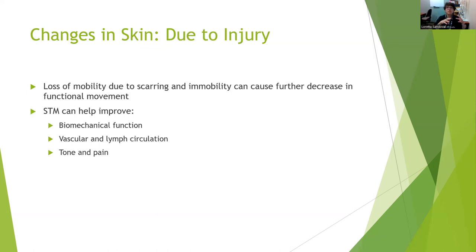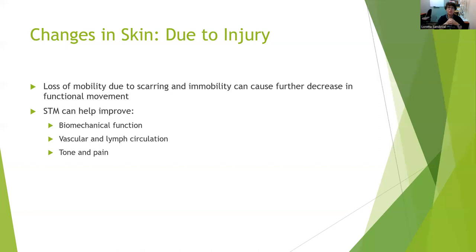You can have changes in your skin due to injury, and we're going to do some skin assessment in the lab. The skin can lose mobility due to scarring and that immobility can cause further decrease in functional movement. Soft tissue mobilization can help improve biomechanical function, improve vascular and lymph circulation, and improve or decrease muscle tone and pain.